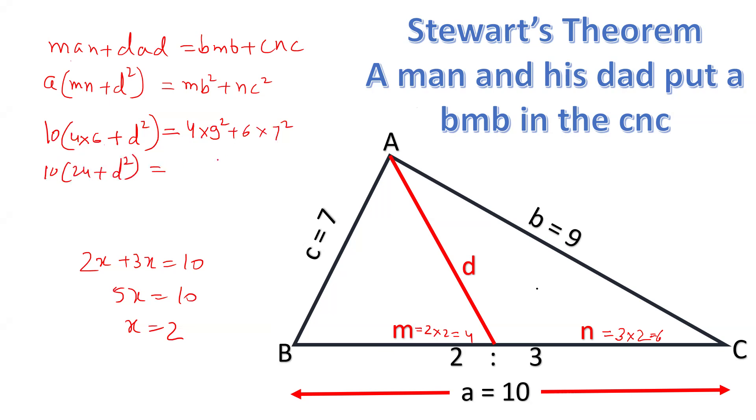Equals to 9 times 9 is 81 into 4, 81 into 4 is 324, plus 6 into 7², 7 squared is 49 into 6. 6 nines is 54, 6 fours are 24, 294.